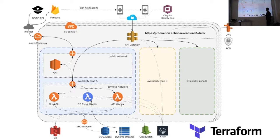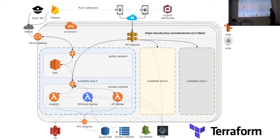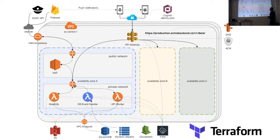This Lambda function polls, in regular intervals, the table with all the record changes. Based on the type of change, it will trigger a push notification to the user. For example, if a new record appears indicating a new child was lost, it gets processed by this Lambda. Based on that type of change, it triggers the push notification through the Firebase service and sends notifications both to iOS and Android applications.